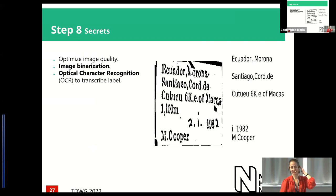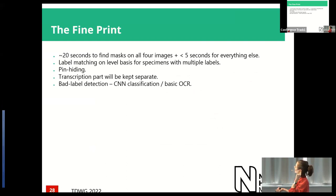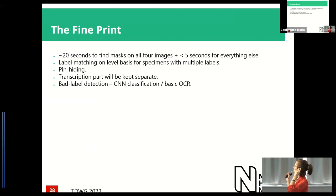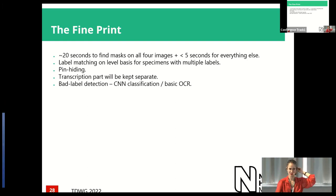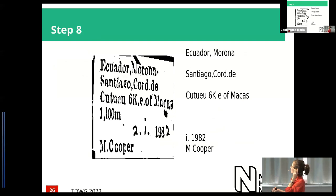The fine print: it takes around 20 seconds for the CNN section to find the masks, which is quite slow. Everything else is really quick. We also do pin hiding — since we found the pins with the CNN, we sometimes look at hiding them by blurring them with the background. Another consideration is that specimens sometimes have more than one label, so you need to decide which labels to merge. We also do some classification to detect bad labels, because if you get a really bad label you don't want that going into your database.